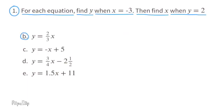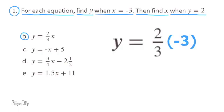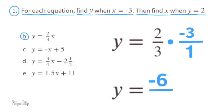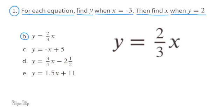Part b: y equals 2 thirds x. First substitute x with negative 3. 2 thirds times negative 3 is the same as 2 thirds times negative 3 over 1. 2 times negative 3 is negative 6 and 3 times 1 is 3. Negative 6 divided by 3 equals negative 2, so y equals negative 2 when x equals negative 3. Now substitute y with 2: 2 equals 2 thirds times x.